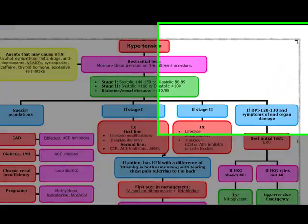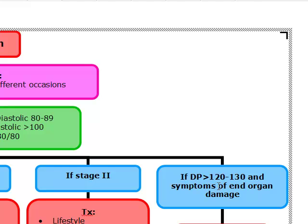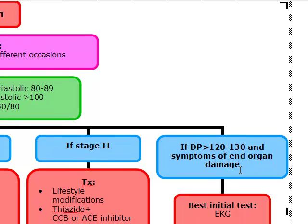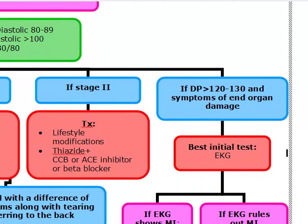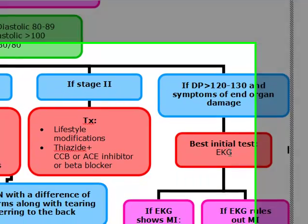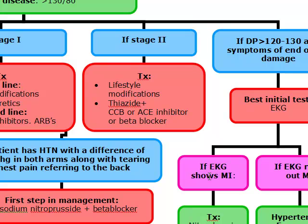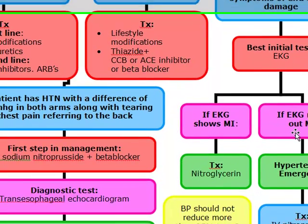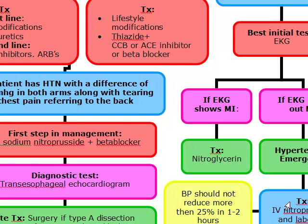If the patient has a diastolic blood pressure greater than 120 to 130 with symptoms of end organ damage, our first initial diagnostic test is going to be an EKG. If it shows an MI, we go to nitroglycerin. But if the EKG rules out MI, this is a hypertensive emergency, so we use nitroprusside and labetalol. We must make sure we don't reduce that blood pressure more than 25% in one to two hours.